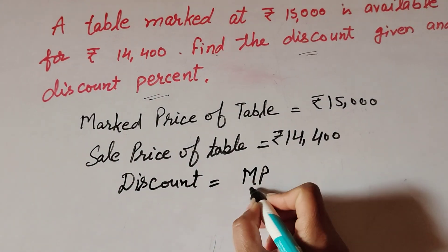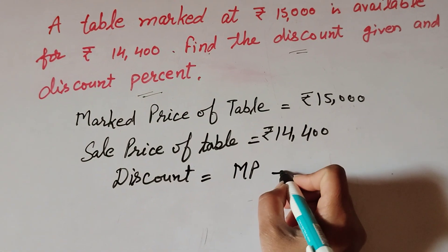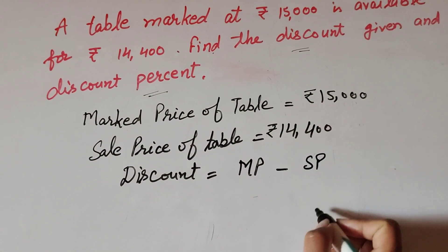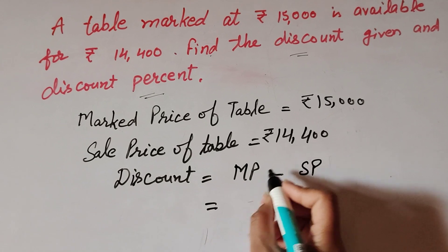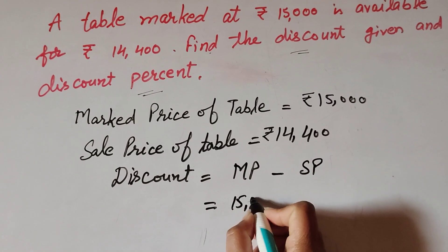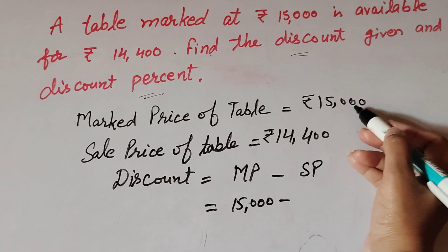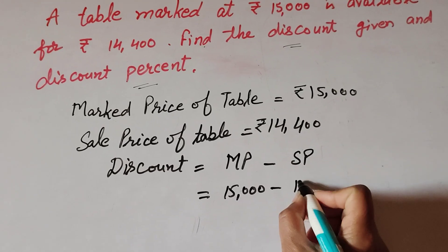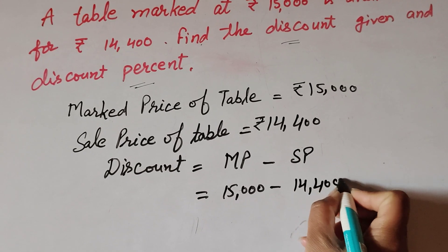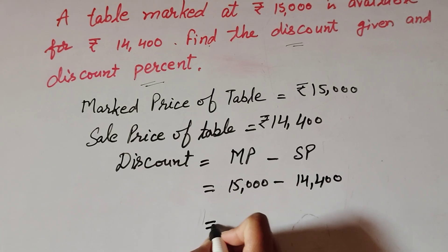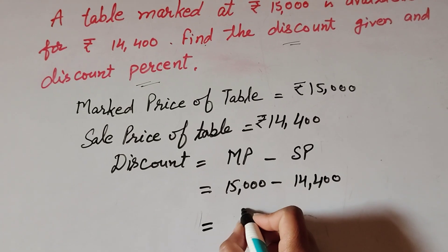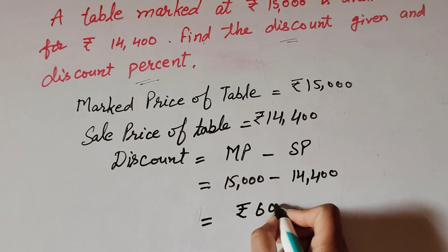Mark price (MP) minus selling price (SP). So in this, marked price is ₹15,000 minus sale price ₹14,400. So 15,000 minus 14,400, on subtracting we get ₹600. So we get ₹600 discount on the table.